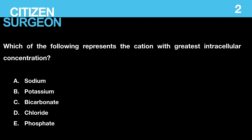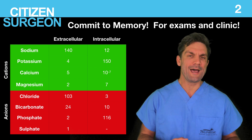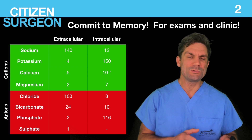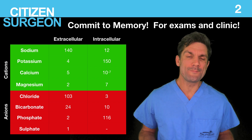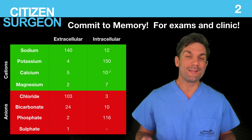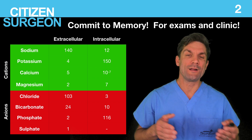Question two: which of the following represents the cation with the greatest intracellular concentration — sodium, potassium, bicarbonate, chloride, or phosphate? If you guessed potassium, you know your intracellular and extracellular cations and anions. Commit this table to memory — it goes over the anions and cations split into intracellular and extracellular concentrations. It's really important, not only to get exam questions right, but so that lab values make more sense when you understand which are the greatest and least concentrations in both compartments.